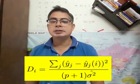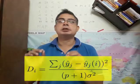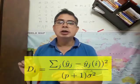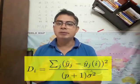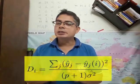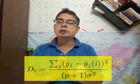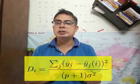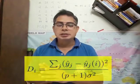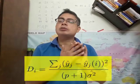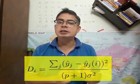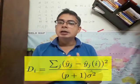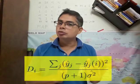Cook's distance D_i, where i is the particular case that you are deleting, is defined as follows. You try to predict all the things using the entire data, that is your ŷ_j. Now, you drop that ith case and again try to predict all the things, that is your ŷ_j(i). You take the L2 norm between them.